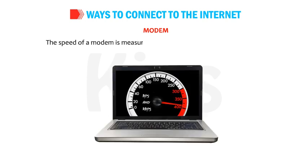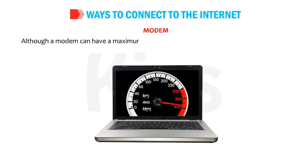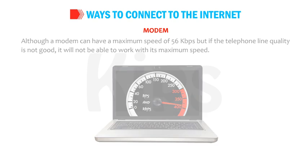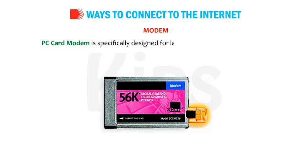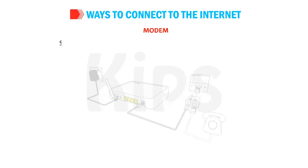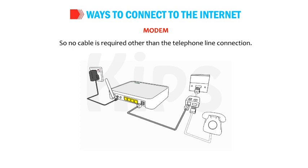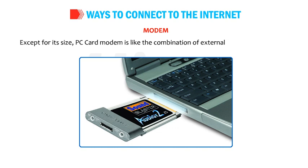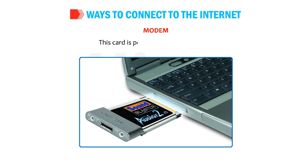This type of modem has indicator lights that display the status of the modem. The speed of a modem is measured in BPS and KBPS — kilobits per second. Although a modem can have a maximum speed of 56 KBPS, if the telephone line quality is not good, it will not be able to work at its maximum speed. PC card modem is specifically designed for laptops and handheld computers. It is similar to the size of a credit card and fits into the PC card slot. No cable is required other than the telephone line connection. PC card modem is like a combination of external and internal modems, and is powered by the computer.